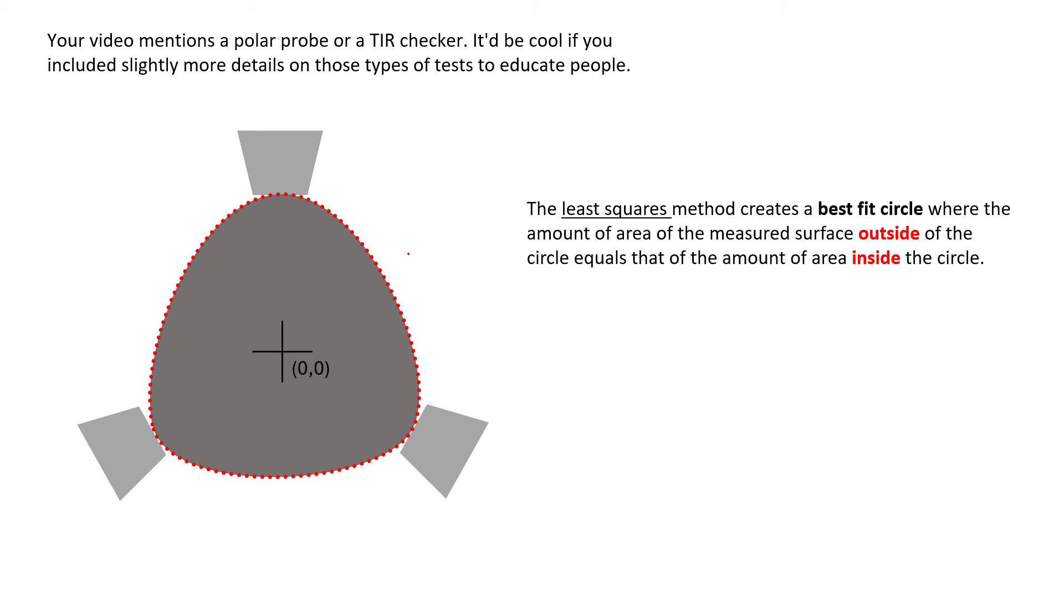So if we know the location of each one of these points with respect to the center of the machine, what the machine can do is apply some sort of algorithm. Now there's a lot of algorithms out there, a lot of methods, a lot of math to be involved in applying a best fit circle. One of those is the least squares method, and that essentially creates a best fit circle where the area outside of the circle equals the amount of area inside the circle.